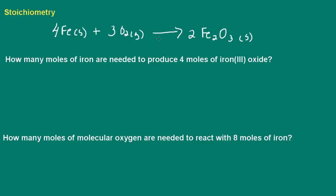Here we have a chemical reaction between iron and oxygen to produce iron-3 oxide. Notice that it is balanced, so we have the coefficients here and these are correct. To produce two moles of iron-3 oxide, I need to react four moles of iron with three moles of oxygen, and that will give me exactly two moles of iron-3 oxide.